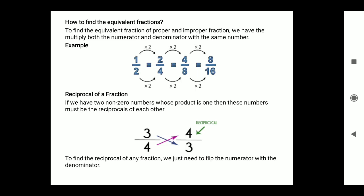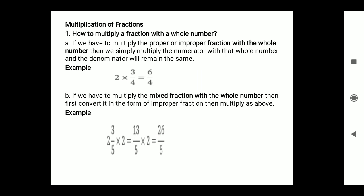Multiplication of fractions: how do we multiply a fraction with a whole number? If we have to multiply a proper or improper fraction with a whole number, we multiply the numerator by that whole number and the denominator remains the same. For example: 2 × 3/4 = 6/4. If we have to multiply a mixed fraction with a whole number, first convert it to an improper fraction, then multiply as above.